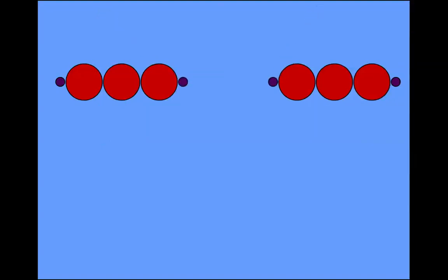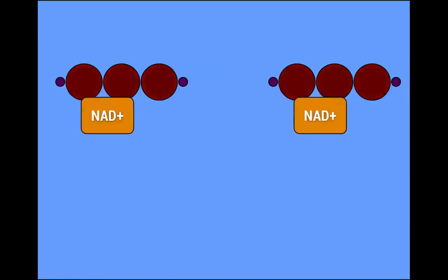Another phosphate group comes in, so there are two phosphates on each PGAL. The NAD plus comes in, and these things are now really energized. So the PGALs start to energize the NAD plus until they have made NADH. The NADH then disappear, go off somewhere else.